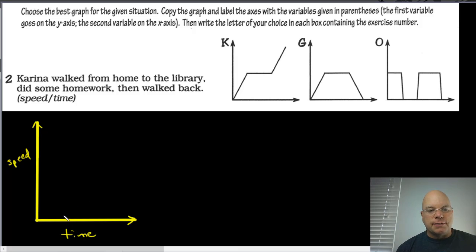So Karina walked from home to the library. In this situation, the very first thing that's happening is she's walking from home to the library, so she's got some typical walking speed. Probably it's not one of these problems where we're graphing the distance she walked, in which case we would see this increasing line as she walked farther and farther.